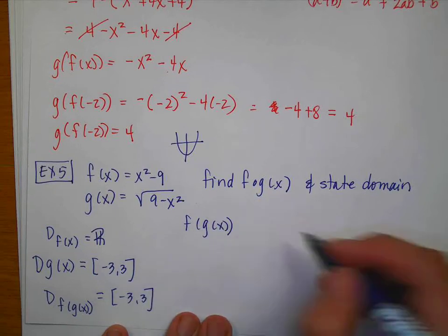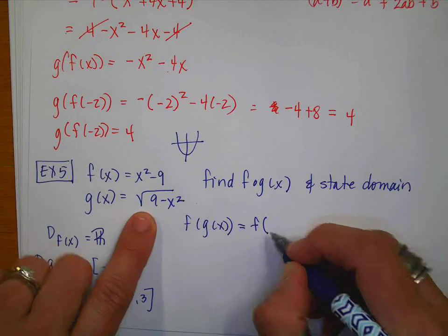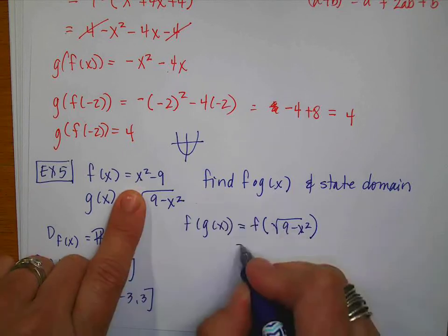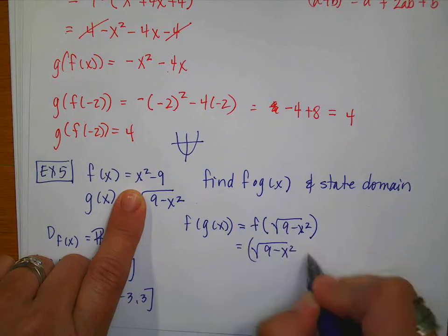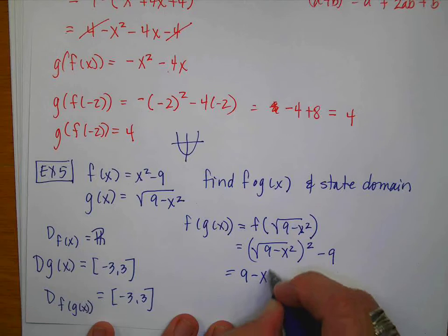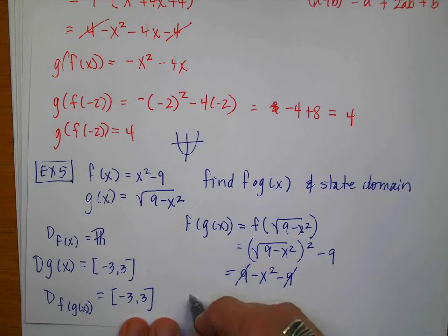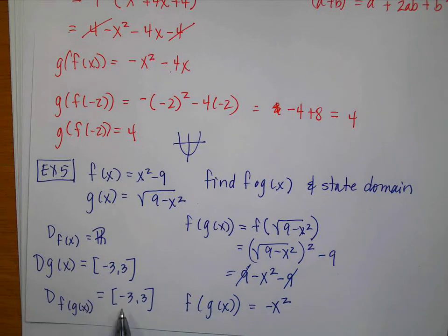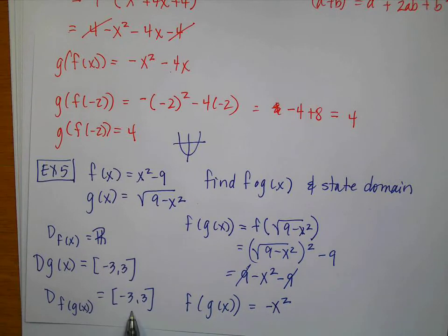Now let's compute the composition. f(g(x)) = f(√(9 − x²)). Substituting into f: (√(9 − x²))² − 9. When you square a radical you get what's under it, so this is (9 − x²) − 9. The 9's cancel, giving f(g(x)) = −x². Even though the domain of −x² alone is all real numbers, the domain of this composition is only [−3, 3] — the intersection of the two individual domains. That's it for today, math humans!